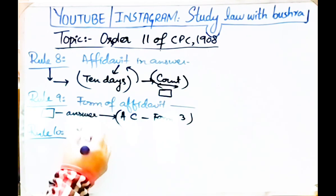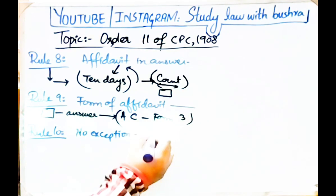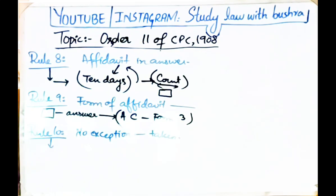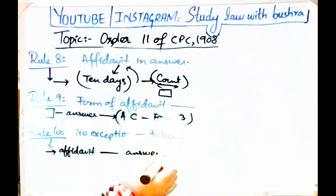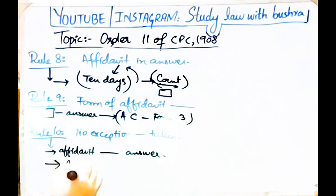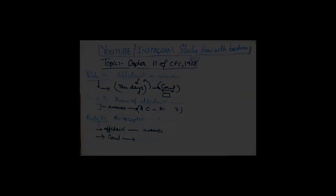Rule 10 baat karta hai no exception to be taken. No exception shall be taken to any affidavit in answer, but the sufficiency or otherwise of any such affidavit objected to as insufficient shall be determined by the court. Yaani jo affidavit aap ne tayyar ki hai agar woh Appendix C ke form ke pattern par nahi hai, to yeh cheez court ne determine karni hai — yeh tamam zimmedari court par hai ke aaya yeh affidavit theek hai ya nahi.